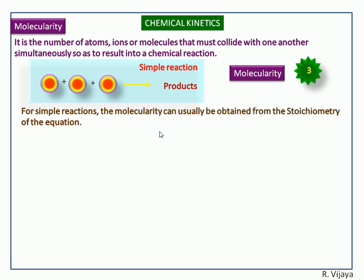For simple reactions, the molecularity can usually be obtained from the stoichiometry of the equation. It is always a whole number. Next we see the complex reaction.